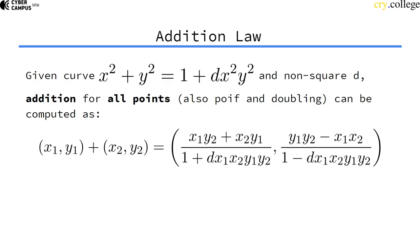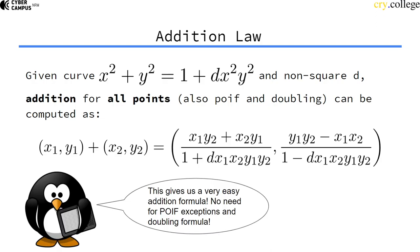This is quite awesome because now we have an elliptic curve that has a very easy point addition formula. There's also no need for a point at infinity or for a separate doubling formula. So it's very easy to compute on an Edwards Curve. We simply have this one formula and that's it. No corner cases, no point at infinity, no doubling.